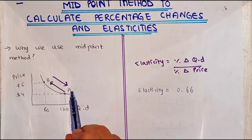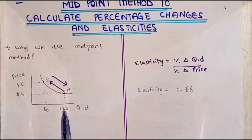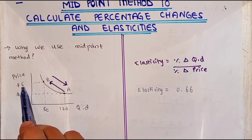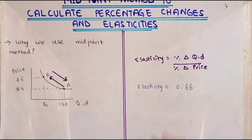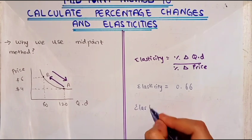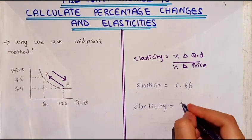Now from B to A, Q1 will be 80 and Q2 will be 120. When we apply P1 and P2, P1 will be 6 and P2 will be 4. So the elasticity equals 1.5.